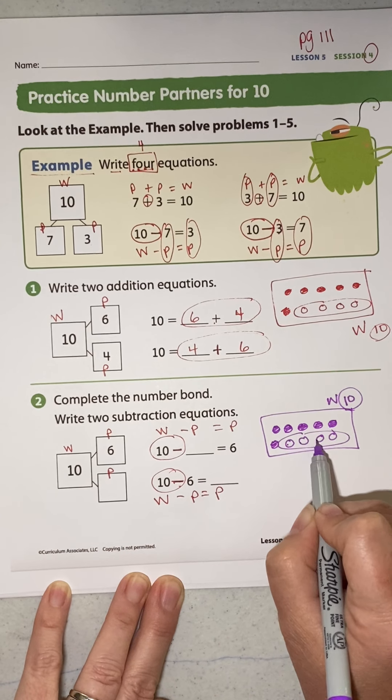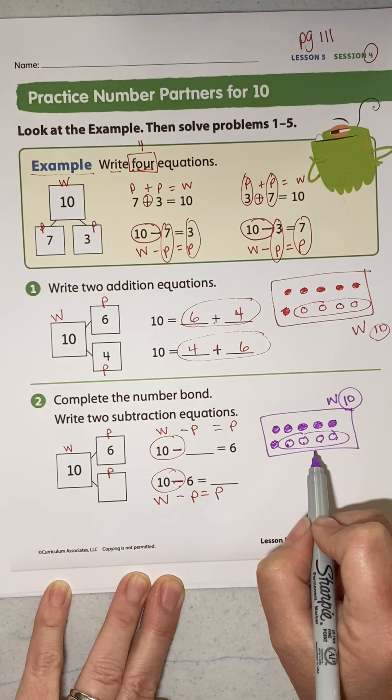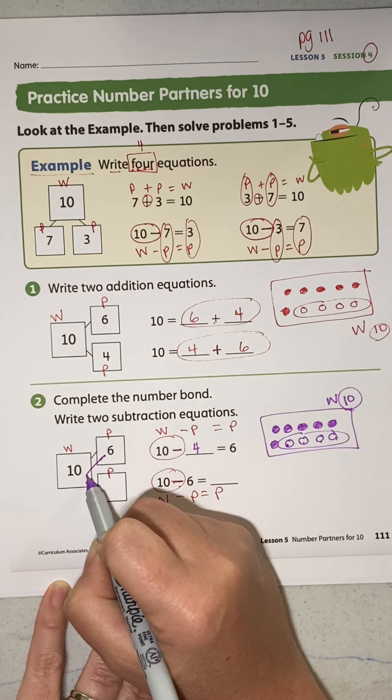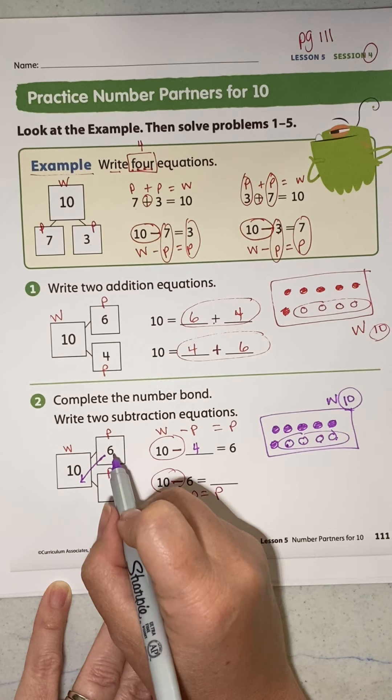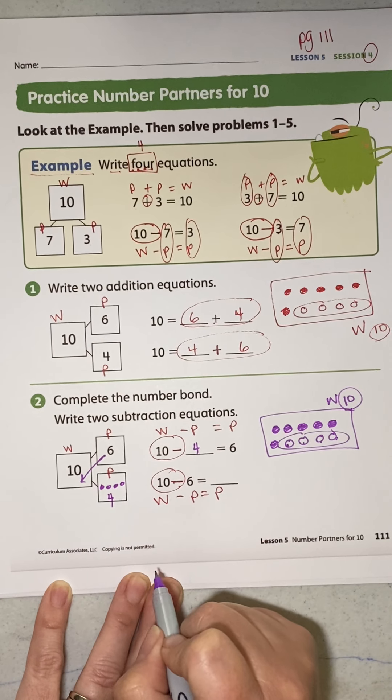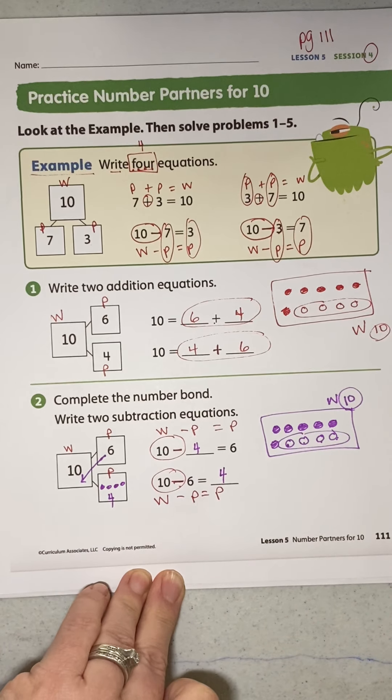What's the part that's missing? 6, 7, 8, 9, 10. How many were not colored in? 4. Right? I can count on from the part that I know up to the whole. 6, 7, 8, 9, 10. My missing part is 4. 10 minus 6 is 4.